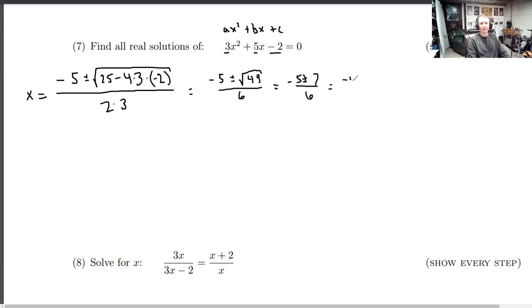Which is negative 5 plus 7 over 6, that's 2 over 6. Or negative 5 minus 7, that's negative 12 over 6. And that simplifies down pretty easily. So we get 1 third or negative 2. So the quadratic formula is more than appropriate to be used here.